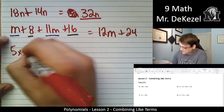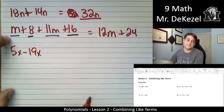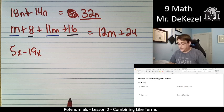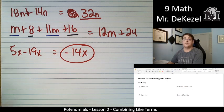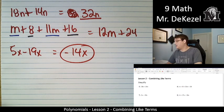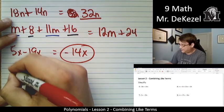We have 5x minus 19x. If you had 5x's and you took away 19x's, you would end up with negative 14x's. Such is life. Down a bunch of x's. All right, let's go to the next one.